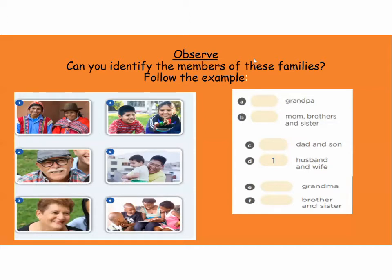Nos está preguntando: can you identify the members of this family? ¿Puedes identificar los miembros de esta familia? Sigue el ejemplo. Acá tenemos imágenes de los miembros de la familia y al lado derecho tenemos las palabras. En el ejemplo de la letra D, tenemos el number one — en la picture number one, ¿quiénes están? El esposo y la esposa.